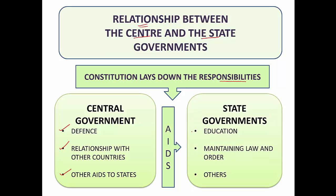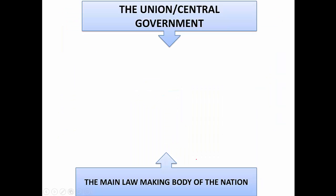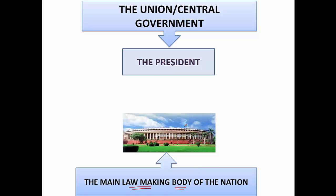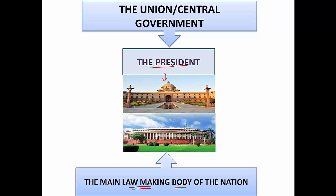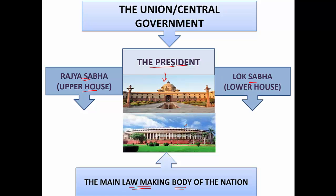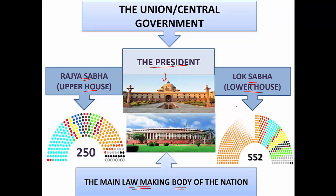The state government takes care of education, maintenance of law and order, and others. The Union or central government functions from the Parliament House — it is the main law-making body of the nation. The President is at the top, with his office at the Rashtrapati Bhavan in New Delhi. We have the Rajya Sabha, which is the upper house, and the Lok Sabha, which is the lower house of the Parliament.